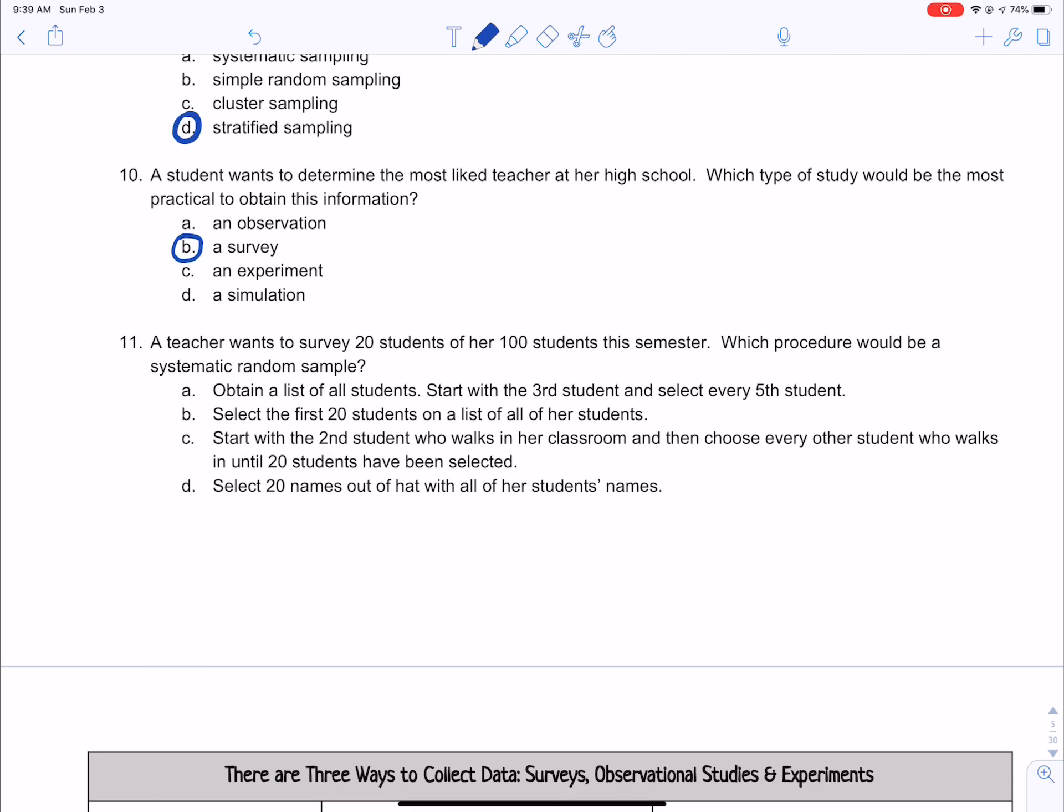Number 11 says a teacher wants to survey 20 students of her 100 students this semester. Which procedure would be a systematic random sample? A says obtain a list of all students, start with the third student, and select every fifth student. B says select the first 20 students on a list of all of her students. So that's definitely not right.